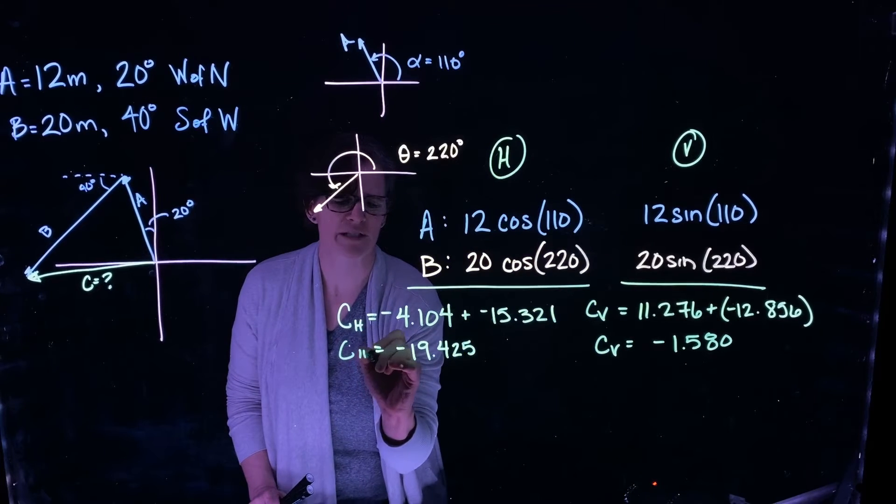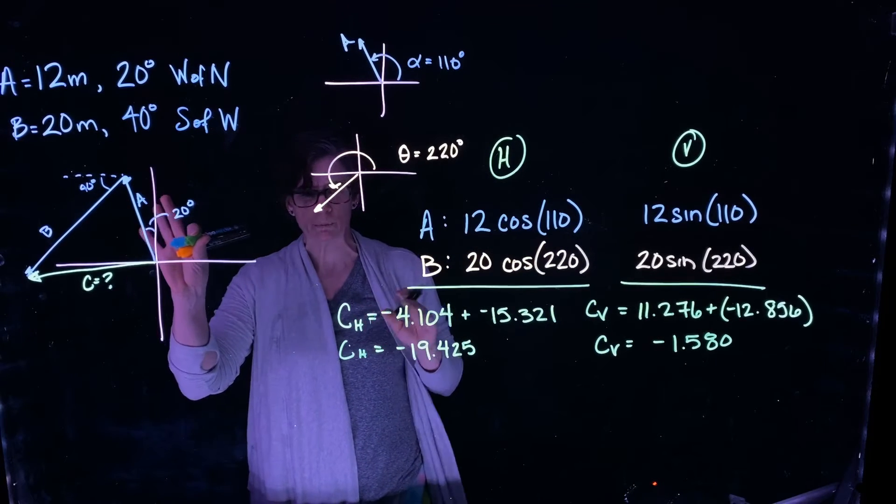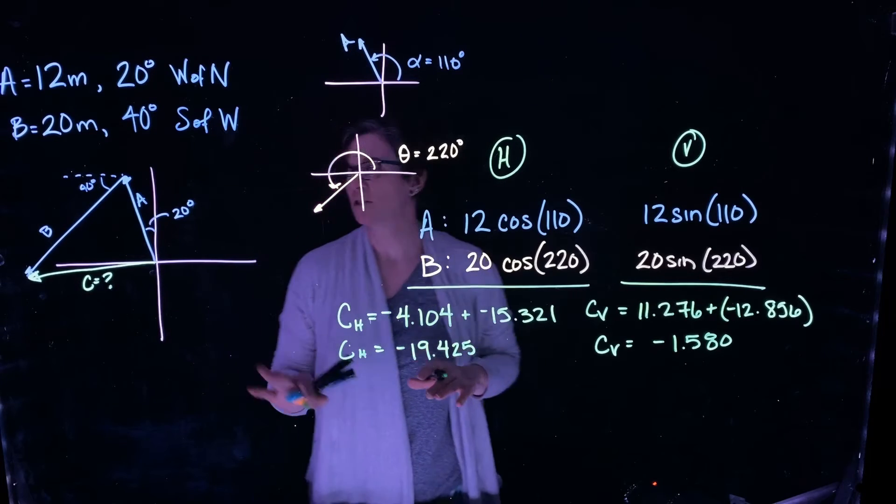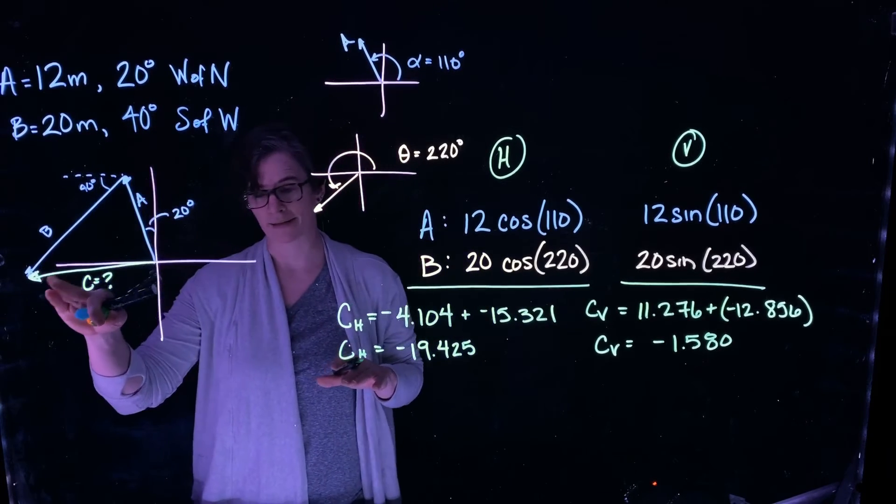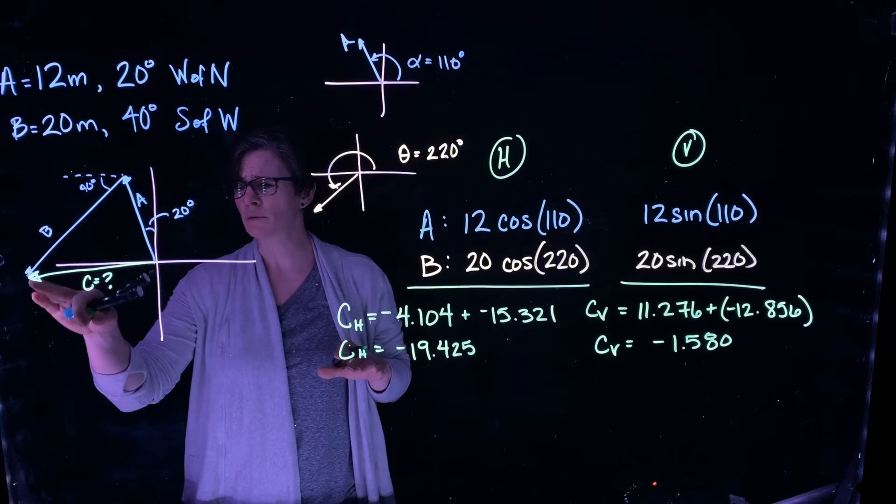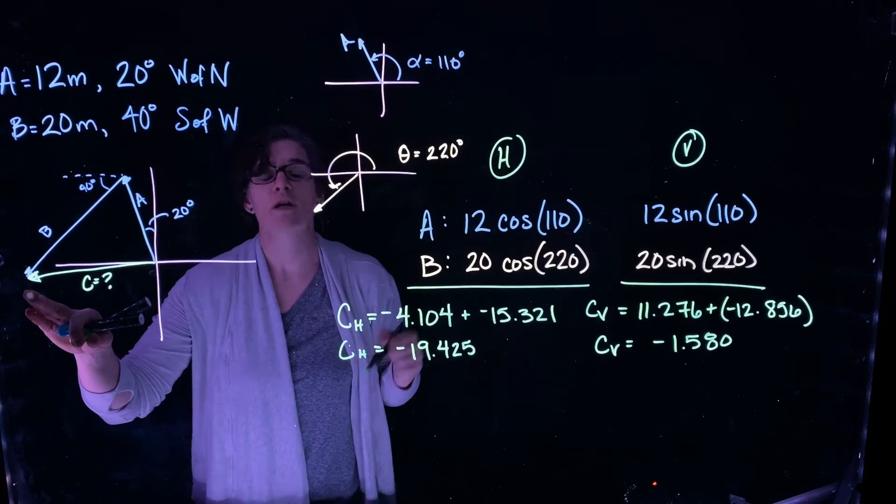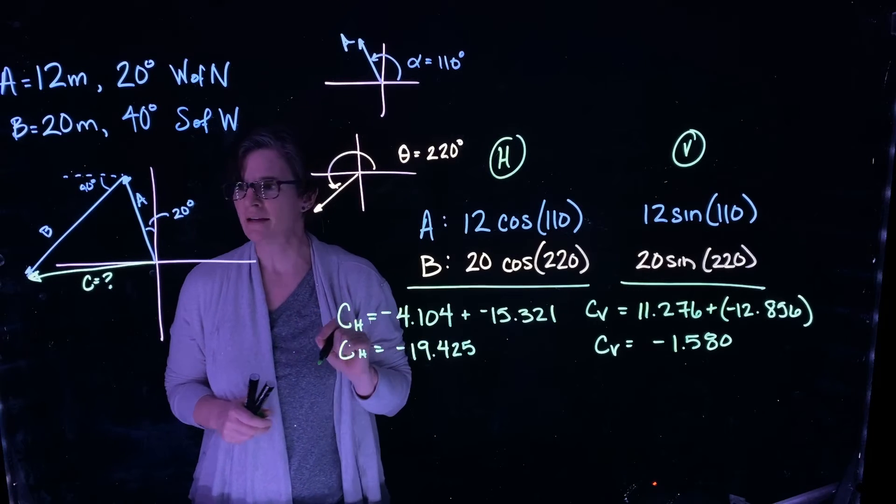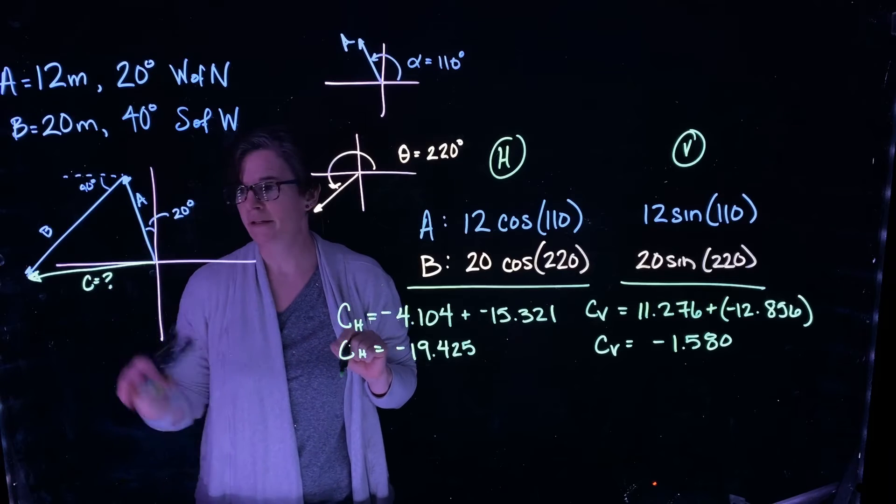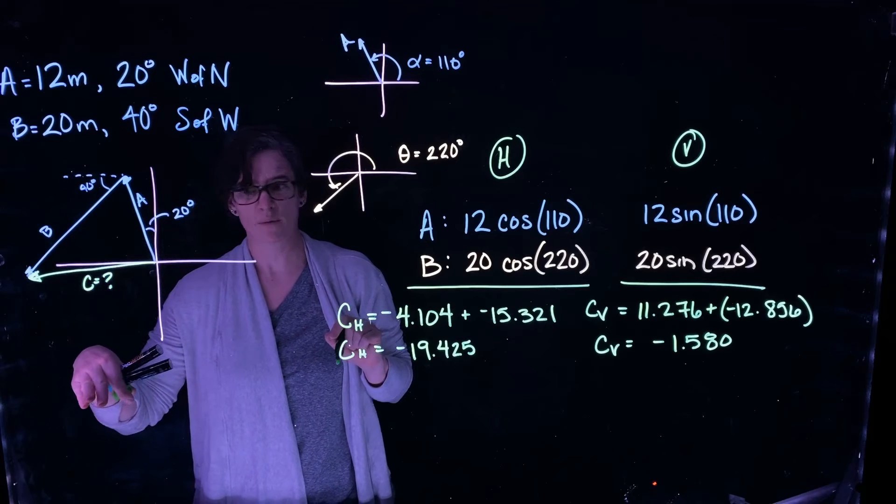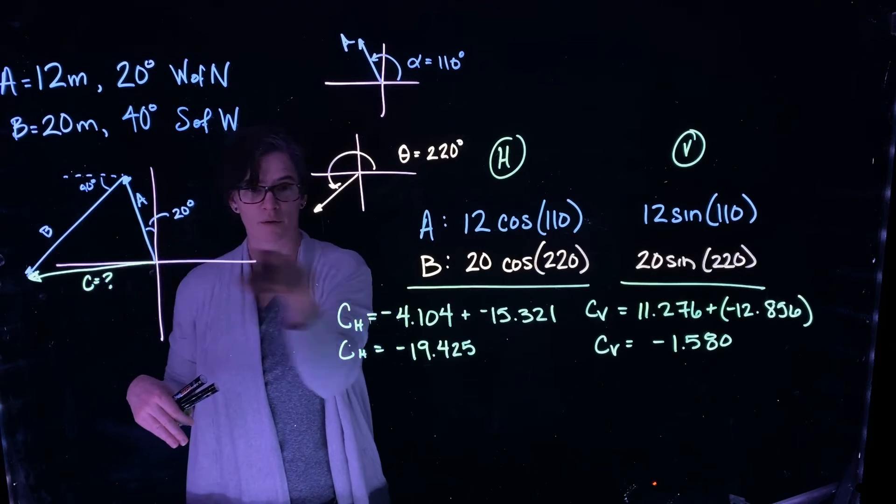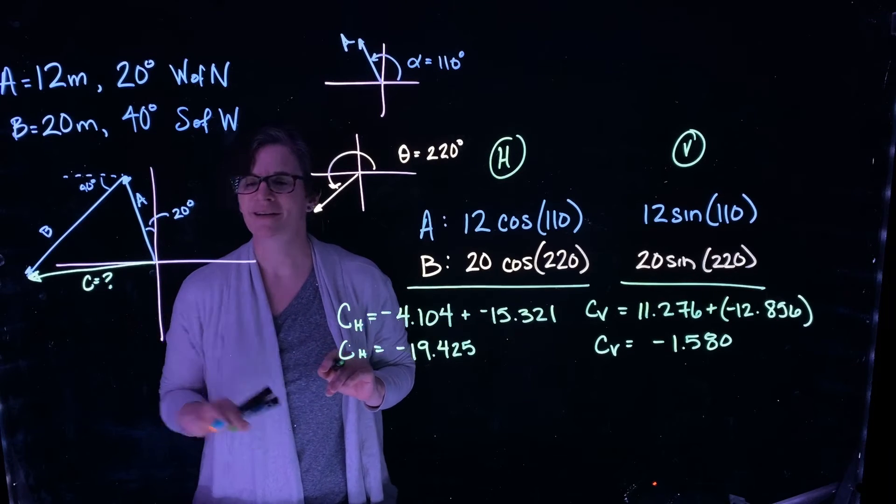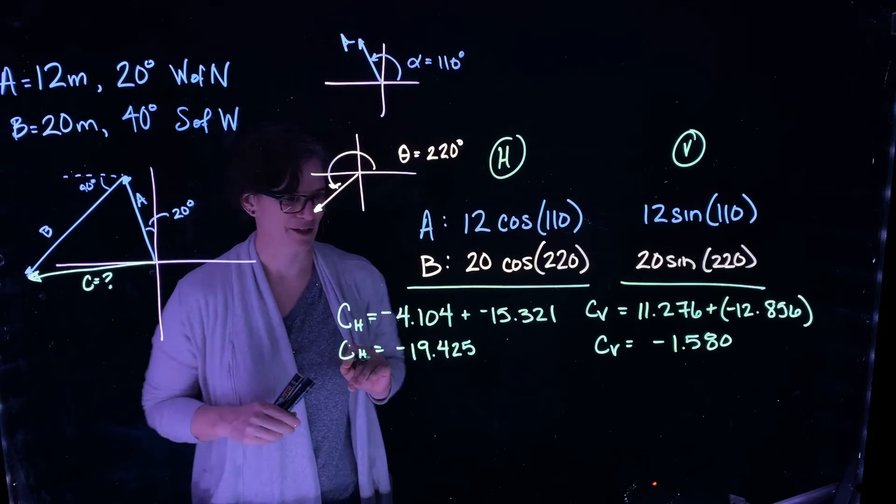Now let's just pause there for just a second and see if these components are consistent with my graphical analysis. So if I did my tip to tail process, I see that resultant vector C is going to be pointing to the left. So the horizontal component should be negative. Sure enough, it is. And I also see that my vertical component is in the downward direction, below the horizontal meridian. So it too should be negative.